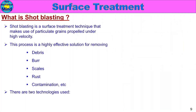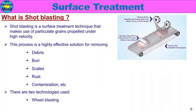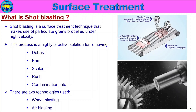There are two technologies used in shot blasting: first, wheel blasting, and second, air blasting. In wheel blasting, a high-RPM rotating wheel propels the grains. In air blasting, high-pressure air propels the grains. These are the two methods of shot blasting.